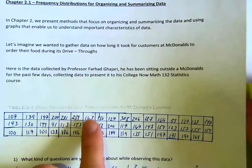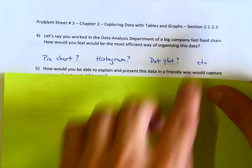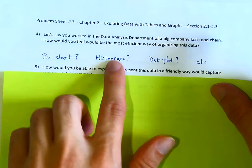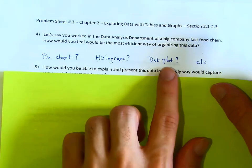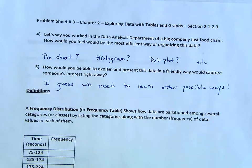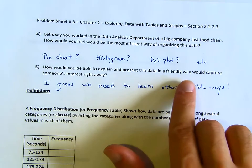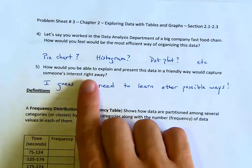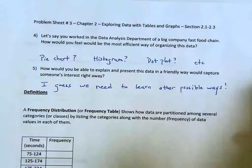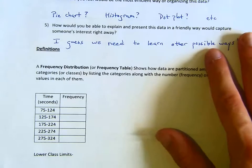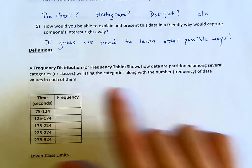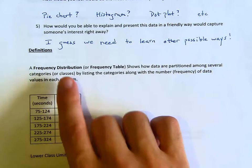If you're not familiar with these types of ways of organizing and expressing data, this is what Chapter 2.1 will be about. We're going to talk about basic forms of presenting data. For the last part: how would you explain and present this data in a friendly way that would capture someone's interest right away? I guess we're going to have to learn all the possible ways.